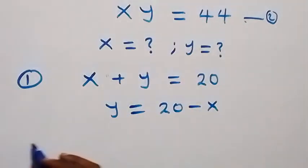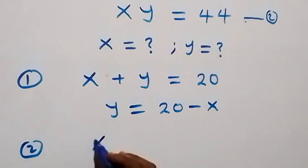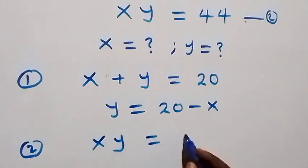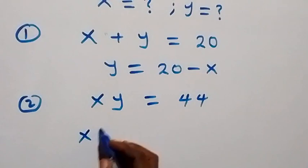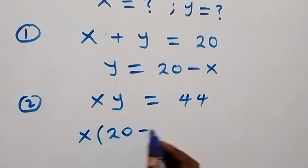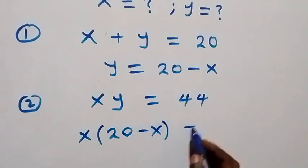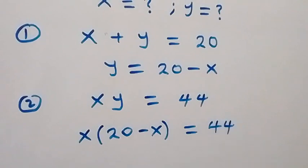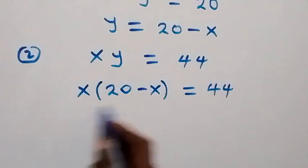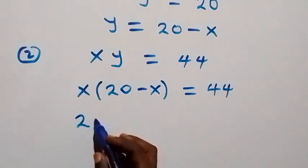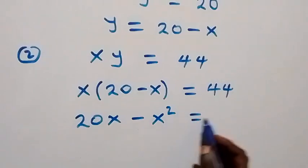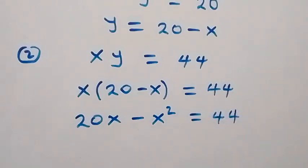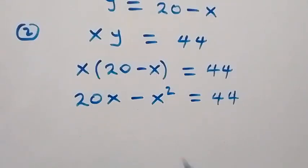From equation two we have x times y equals to 44. When we substitute the value of y as 20 minus x, this becomes x times (20 minus x) equals to 44. We use x to open the brackets and we have 20x minus x squared equals to 44.